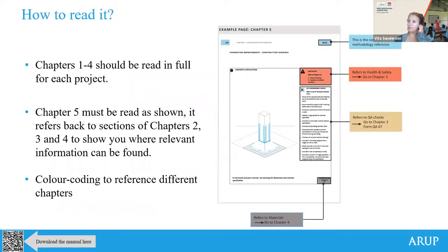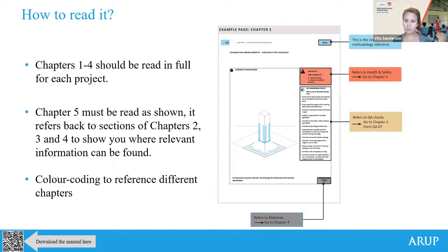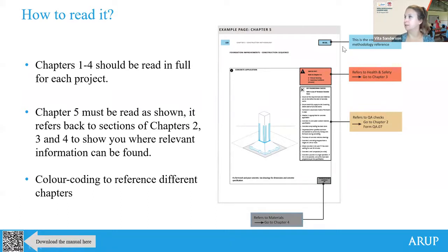A lot of the chapters - health and safety, quality assurance, materials - apply to every project. Chapter five looks back at those chapters but references them specifically around each phase of retrofitting. So if you're doing jacketing, you look at materials for jacketing and it goes stage by stage. The manual is cross-referenced throughout, making it easy to reference relevant parts of different chapters as you go through.